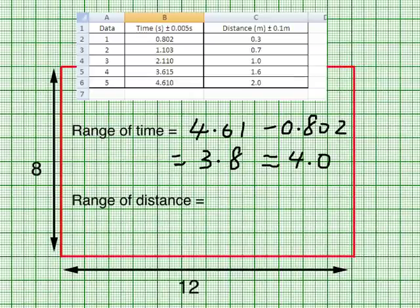I do the same things for the range of distance. The biggest value is 2.0 minus the smallest, 0.3, and I get an approximate value of 1.7, which if I were to round it off, it's going to be 2.